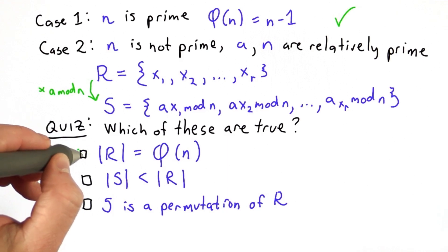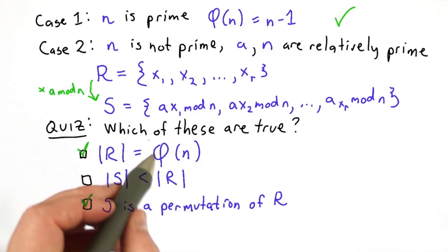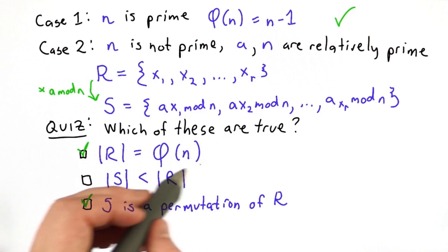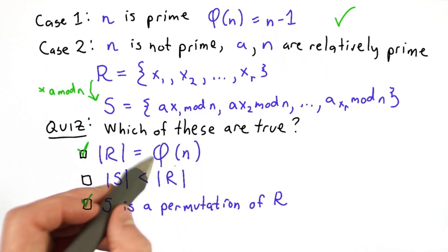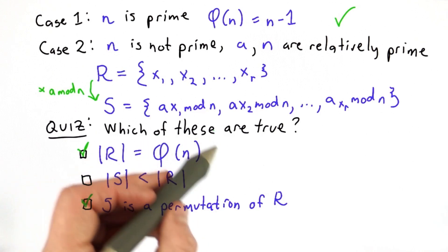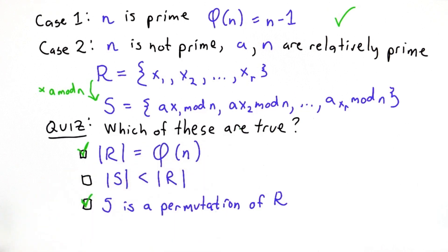The answer is the first and the third are true. For the first one, we know that the size of r is equal to the totient of n. That's the way the totient is defined. It's the number of positive integers less than n that are relatively prime to n. That's exactly how we defined r.